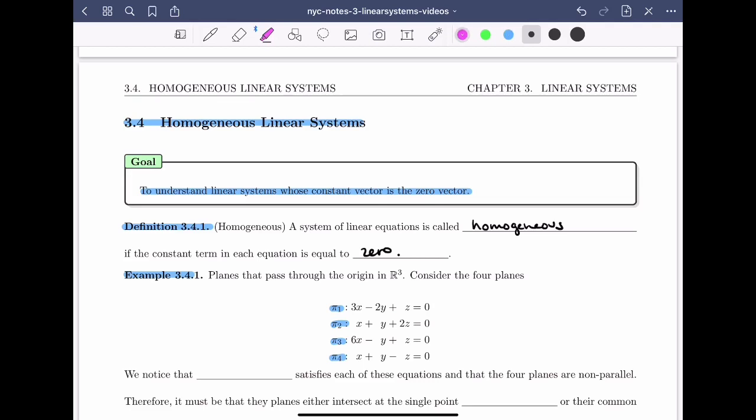Notice that in each of these equations, the constant term is zero. So in particular, if you think about plugging in for x, y, and z, it's obvious that each of these equations will be satisfied when x equals zero, y equals zero, and z equals zero.